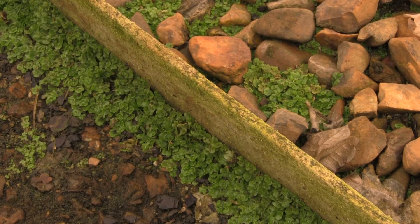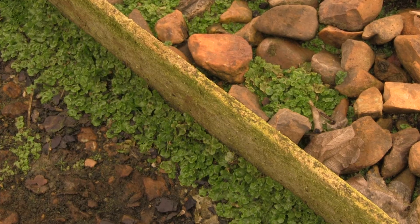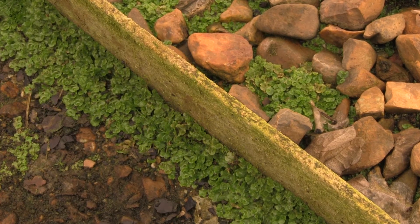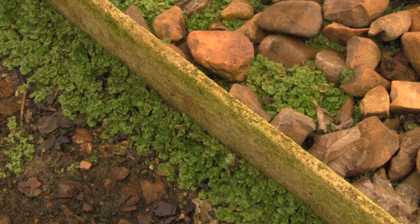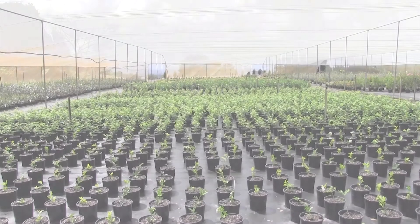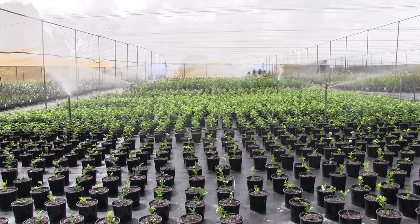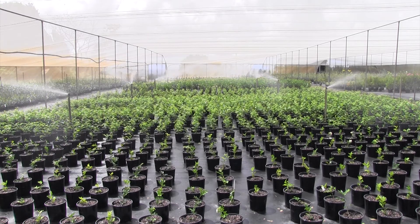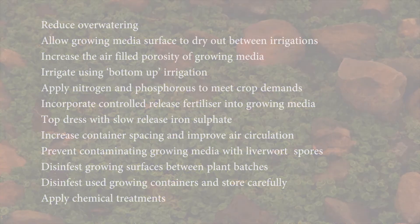Liverwort can be a troublesome weed for many production nurseries. Liverwort populations can develop quickly and thrive in areas of low light, high humidity and high nutrition. Liverwort spreads through rain and irrigation splash, making this a particularly difficult weed to manage. Growers have had success in managing liverwort infestations within production nurseries by using the following strategies.